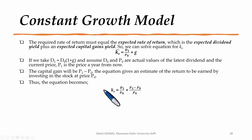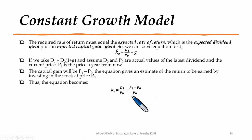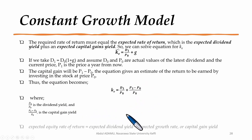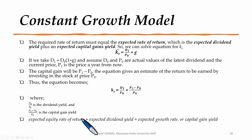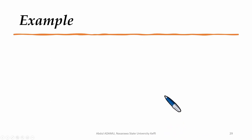So this equation becomes: the first part — D₁ / P₀ — is what we call the dividend yield, and the second part is the capital gain yield. Therefore, the expected rate of return equals the expected dividend yield plus the expected growth rate, or the capital gain yield.